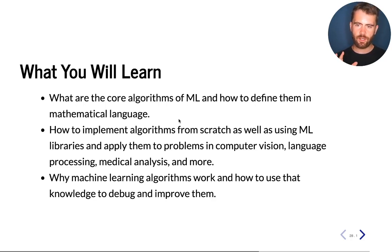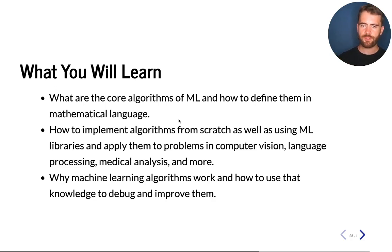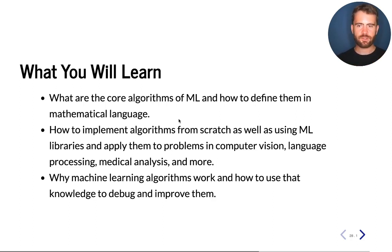Another aspect specific to this course — one that is often not covered in standard machine learning courses — is how to approach and solve machine learning problems in practice. For example, you may apply a deep neural network to a problem, but once you have a first implementation, it's often not obvious what to do next. Do you change the internals of the algorithm? Try a different algorithm? Get more data? There's a practical problem-solving approach needed to deploy these algorithms in practice, and that's something we will also look at in this course.